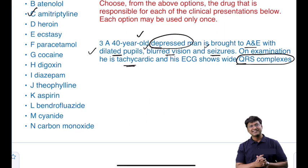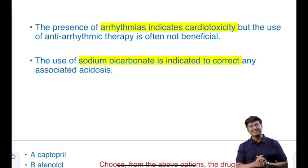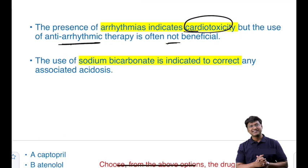In amitriptyline overdose, the individual will have anticholinergic effects: dry mouth, dilated pupils, urinary retention, and tachycardia. In these patients, the presence of arrhythmia indicates cardiotoxicity. For arrhythmias caused by amitriptyline, there is no use of anti-arrhythmic drugs. To treat amitriptyline overdose, you give sodium bicarbonate.